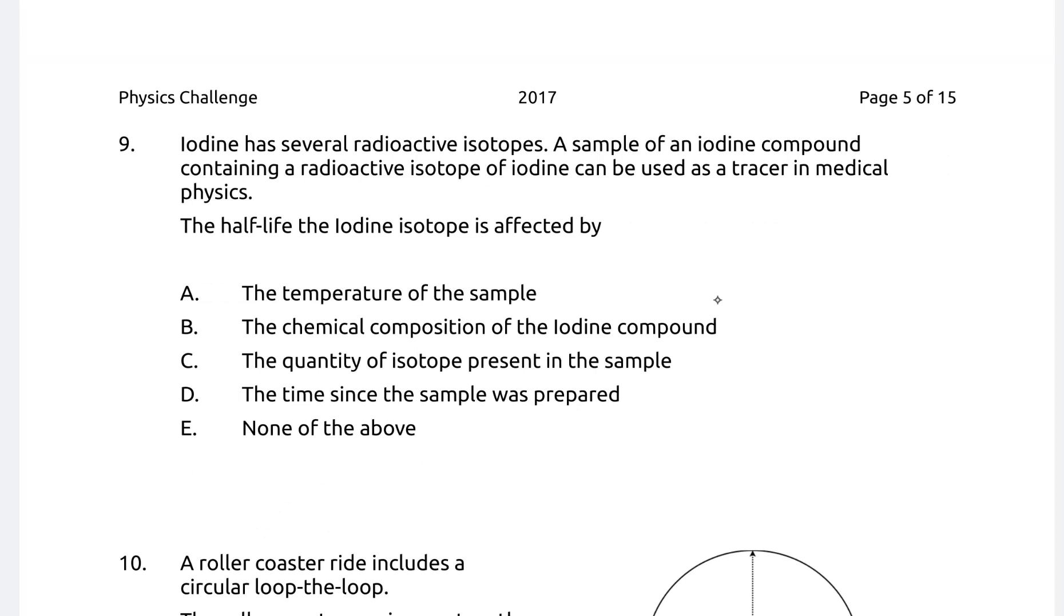Next one: Iodine has several radioactive isotopes. A sample of an iodine compound contains a radioactive isotope that can be used as a tracer in medical physics. The half-life of the iodine isotope is affected by the temperature of the sample, the chemical composition, the quantity present in the sample, the time sample was prepared, none of the above. It's an intrinsic quantum mechanical property that is not affected. We cannot make it decay quicker or slower.